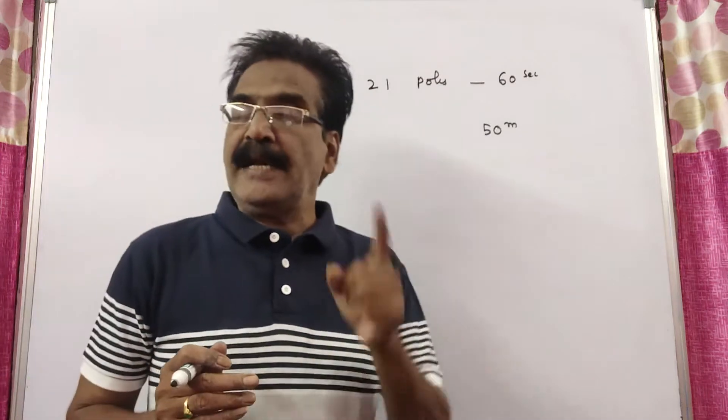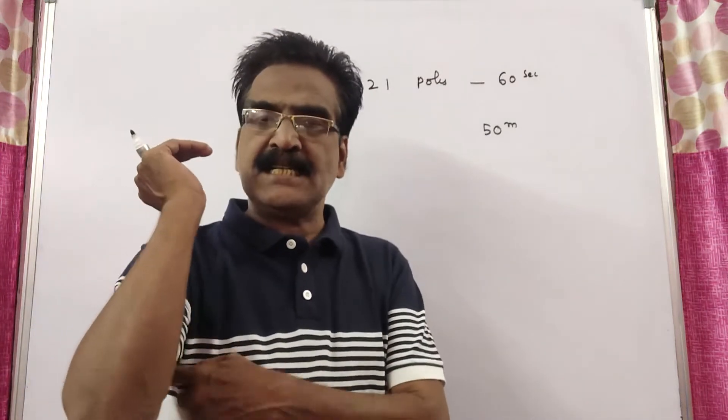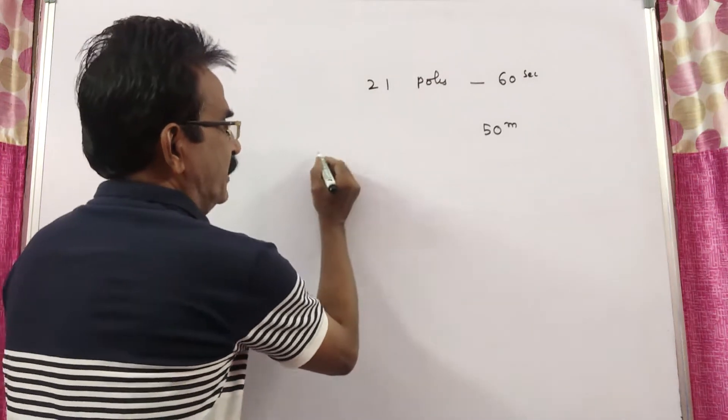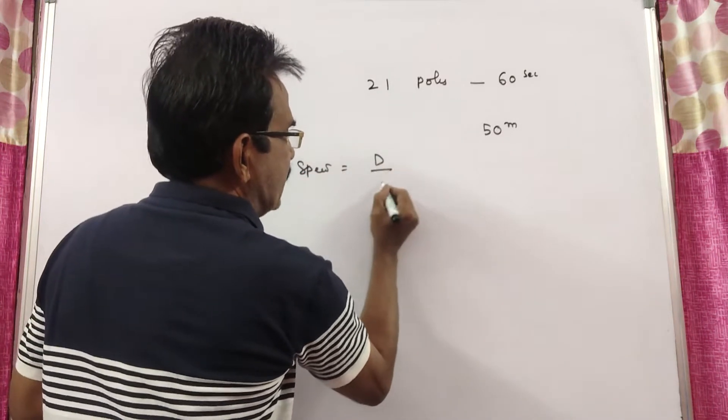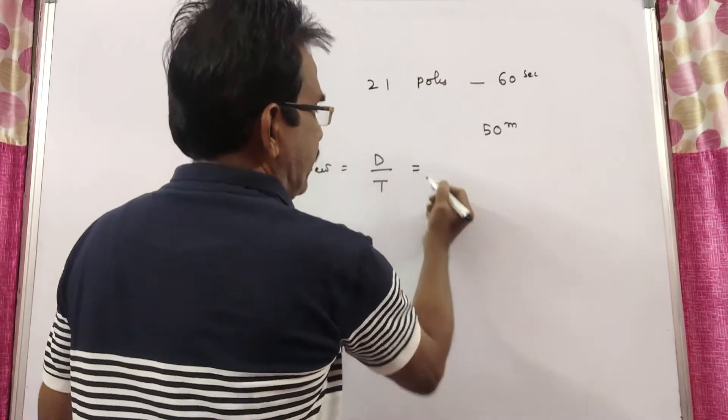So here the question is, at what speed is the train traveling? We want the speed of the train. Speed is equal to distance by time.